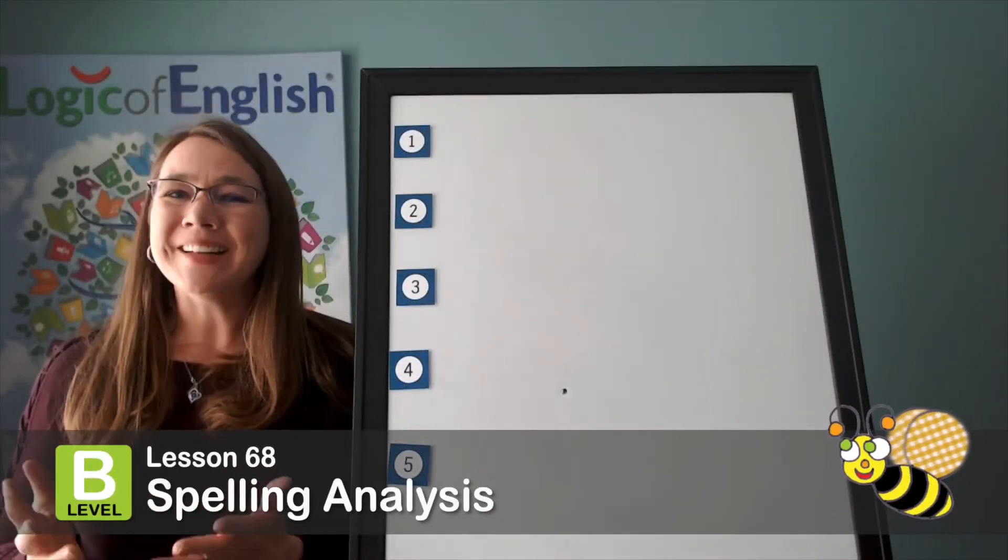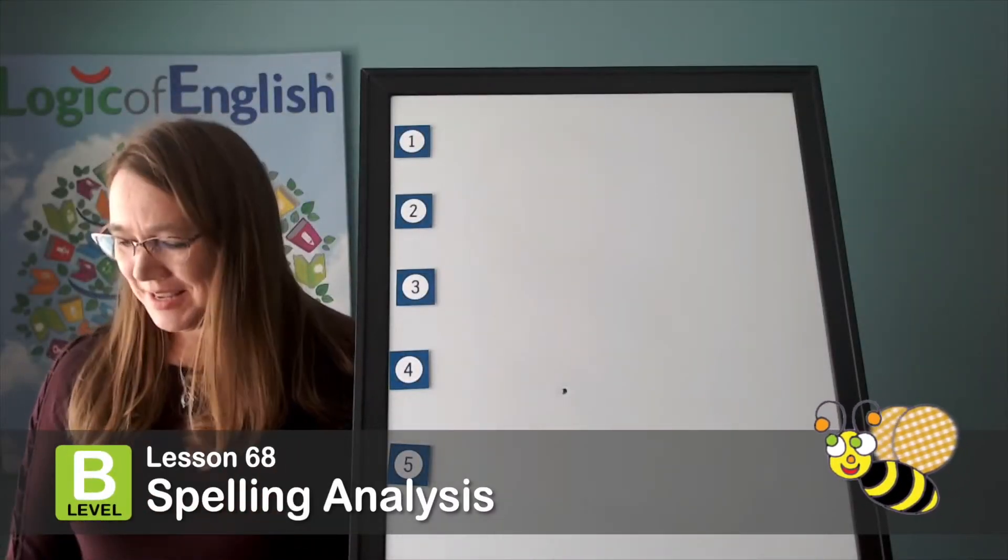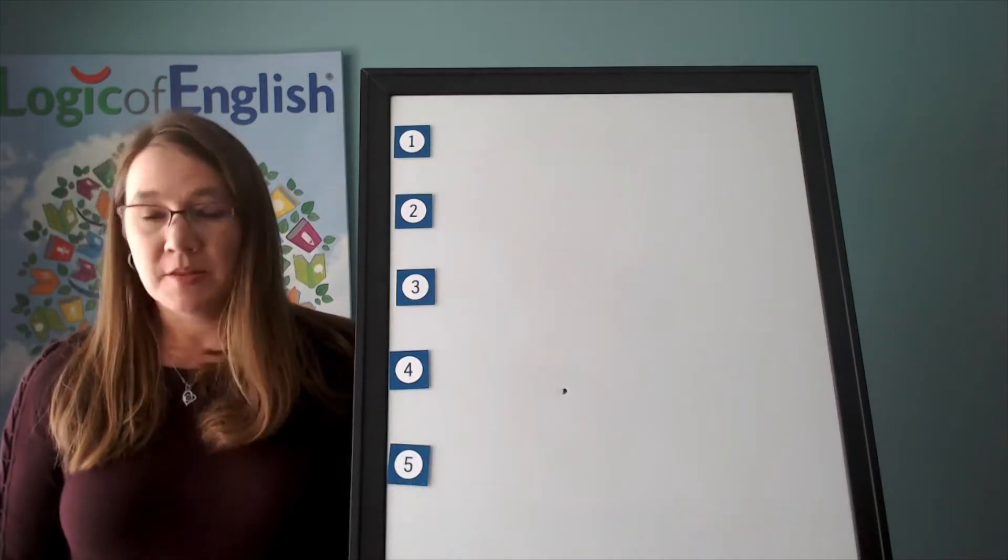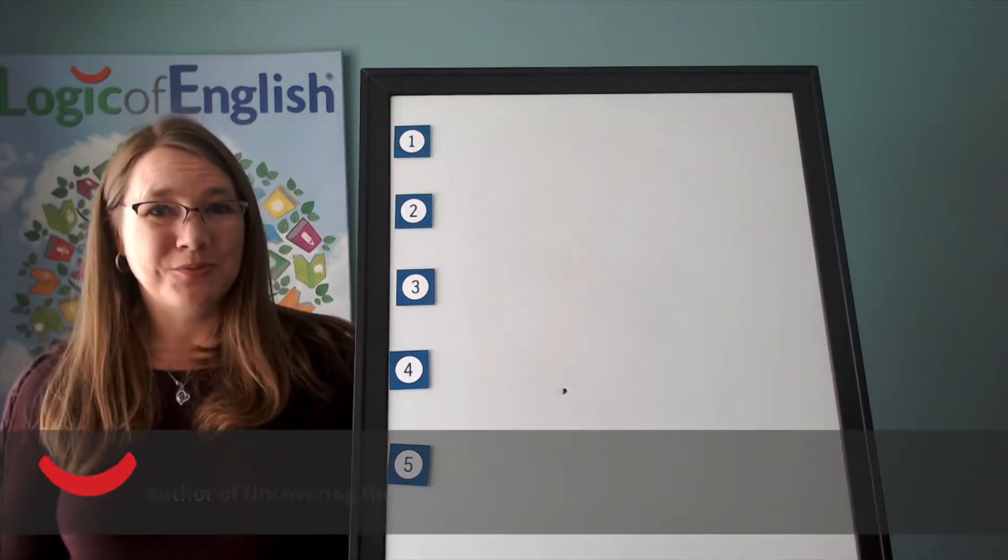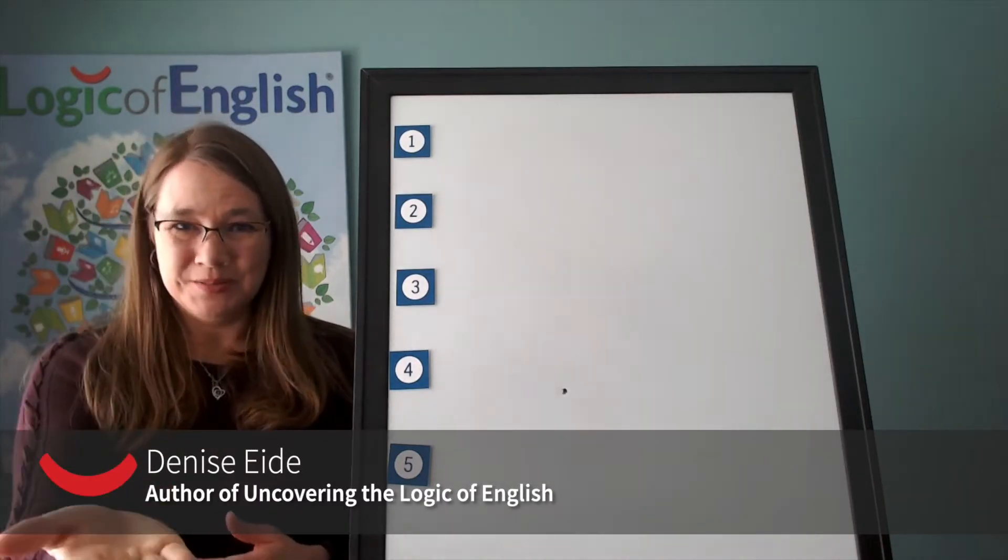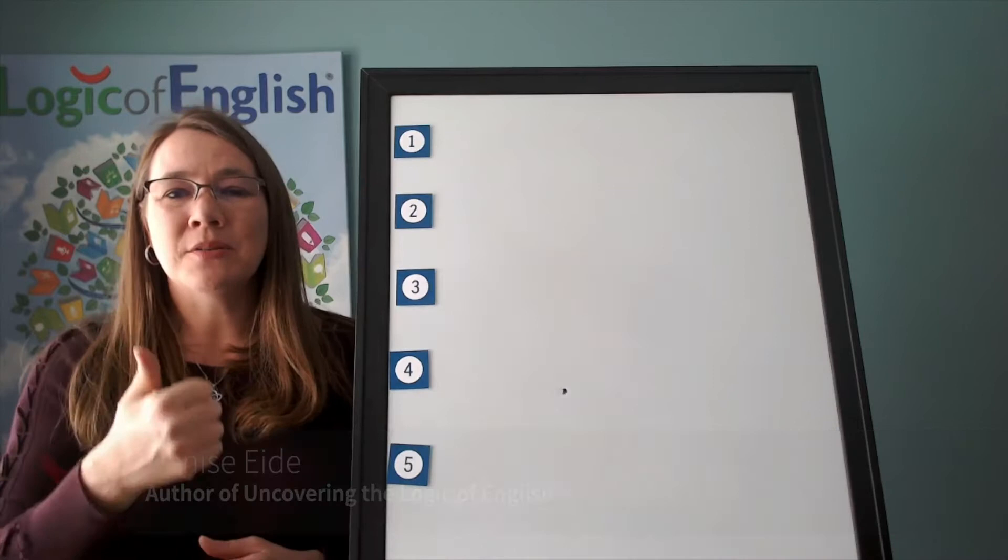It's time for a spelling analysis. All right, our first word is ball. The ball bounced across the room. Ball. Go ahead and say ball. Let's sound it out.